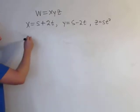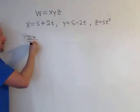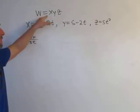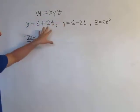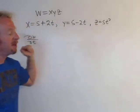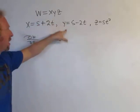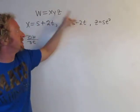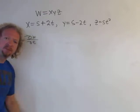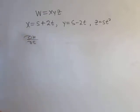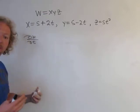In other words, we could actually compute ∂w/∂t, and it should make sense because w is technically a function of two variables, s and t. One way to do it is to just plug in x, y, and z, multiply it all out, and take the partial derivative. But the point of this video is to show you how to use the chain rule, which is very useful in mathematics.